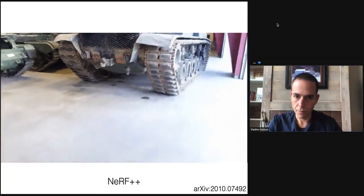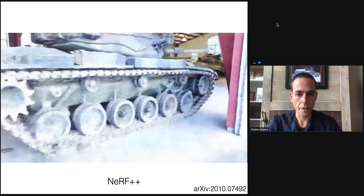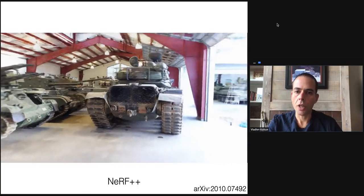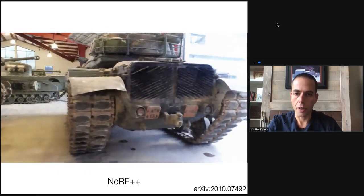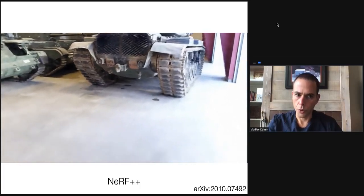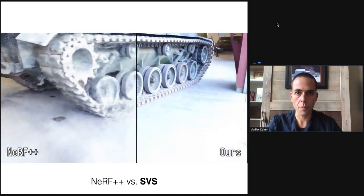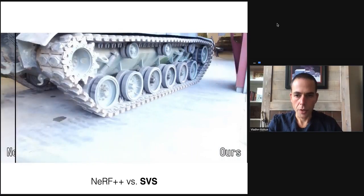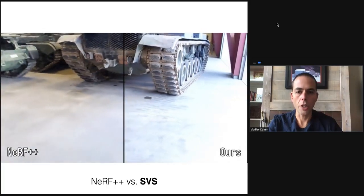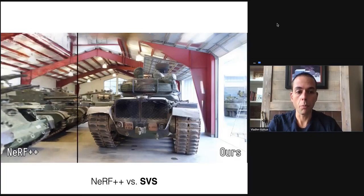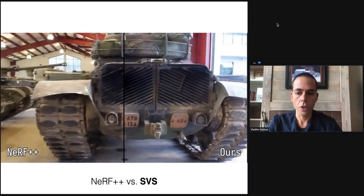NeRF++ is doing something reasonable, but there are clearly issues: blurring and patterning artifacts visible through the image. The appearance generated by NeRF++ is not bad, but it's not movie quality. Here's a side-by-side comparison with NeRF++ on the left and Stable View Synthesis on the right — it's a dramatic difference. The Stable View Synthesis results are much, much closer to essentially movie quality; they're not perfect, but much cleaner than the appearance generated by NeRF++.